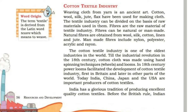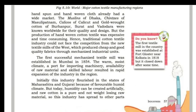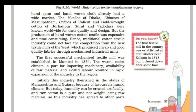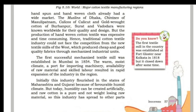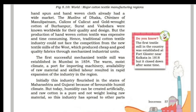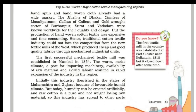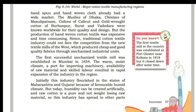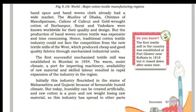Before British rule, Indian handspun and hand-woven cloth already had a wide market. The muslins of Dhaka, calicos of Calicut, and gold-work of Burhanpur and Surat were known worldwide for their quality and design.